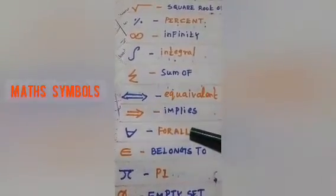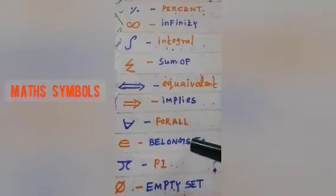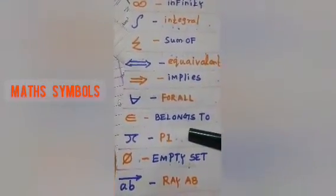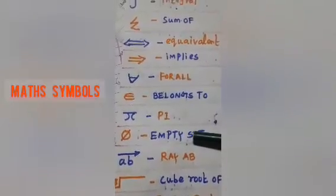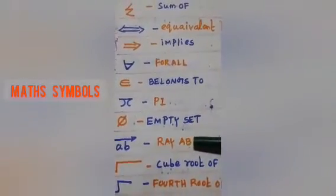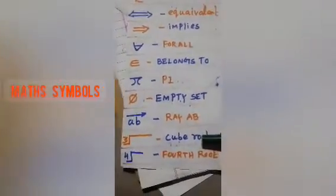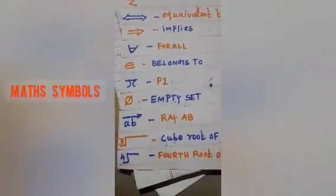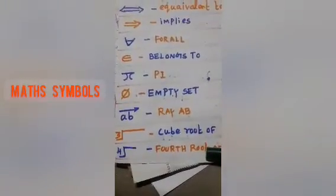For all, blanks to, pi, empty set, ray AB, cube root of, fourth root of.